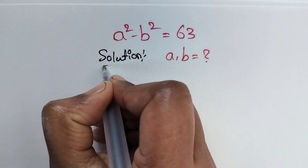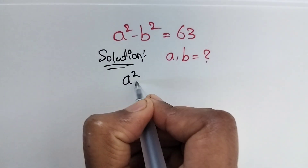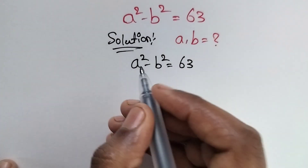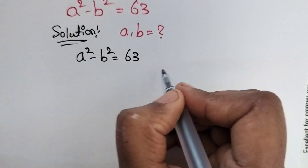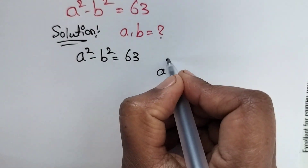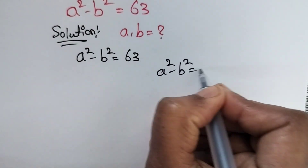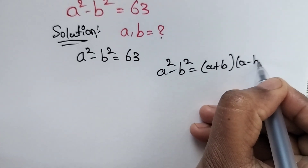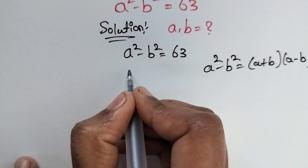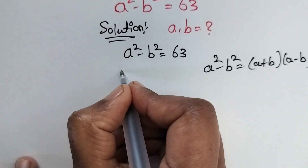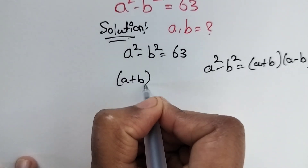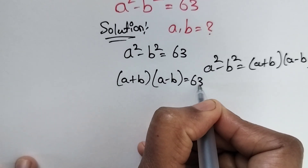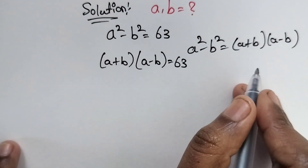We have given that a squared minus b squared is equal to 63. We know this formula: a squared minus b squared is equal to (a plus b) times (a minus b). So in place of a squared minus b squared, we write (a plus b) times (a minus b) is equal to 63.